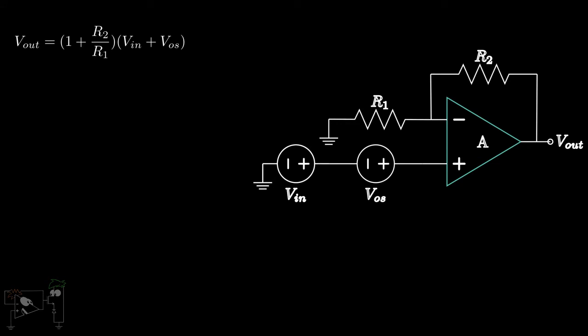This means that the op-amp not only amplifies the input, but also the offset voltage, leading to severe inaccuracies. Suppose the value of VIN is 1 millivolt and the value of the input offset voltage is 0.1 millivolts. If the gain of the circuit is 10, then the VIN will be amplified to 10 millivolts and VOS will be amplified to 1 millivolt.